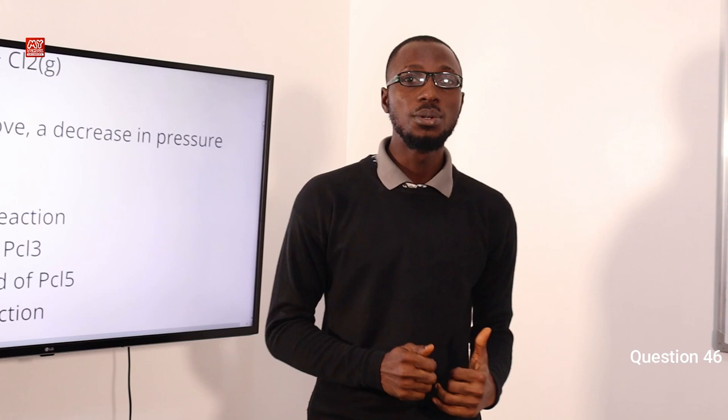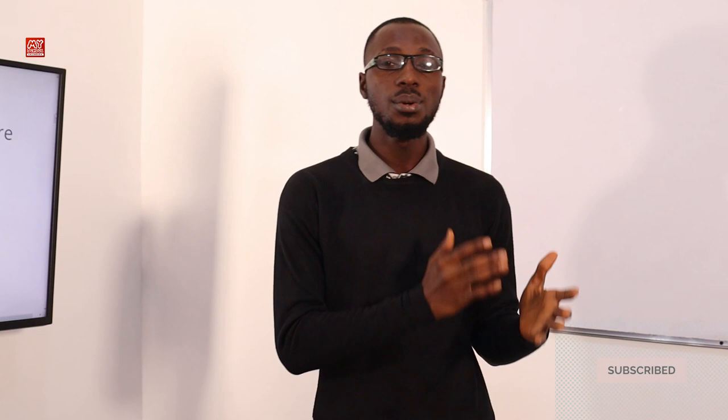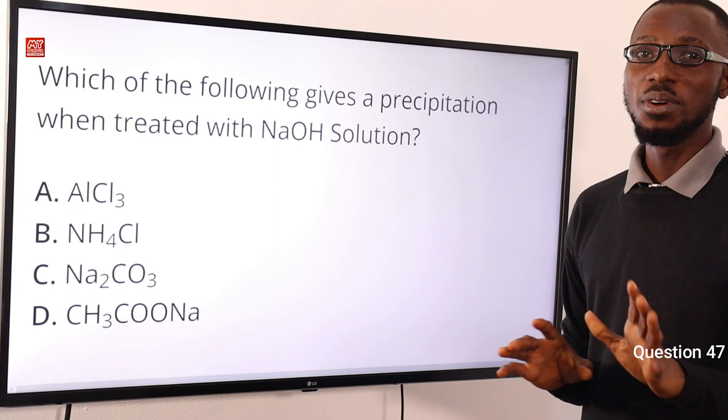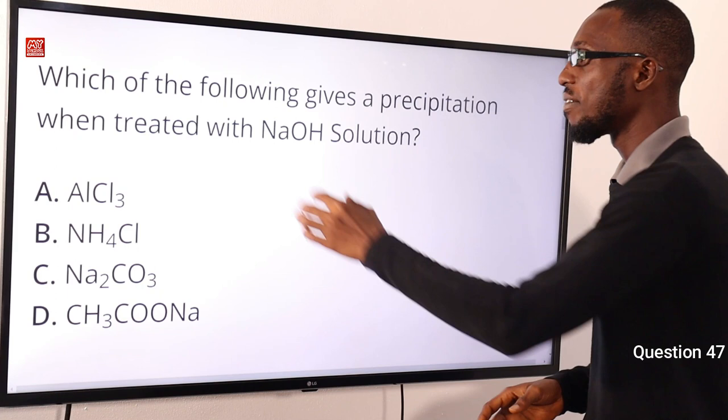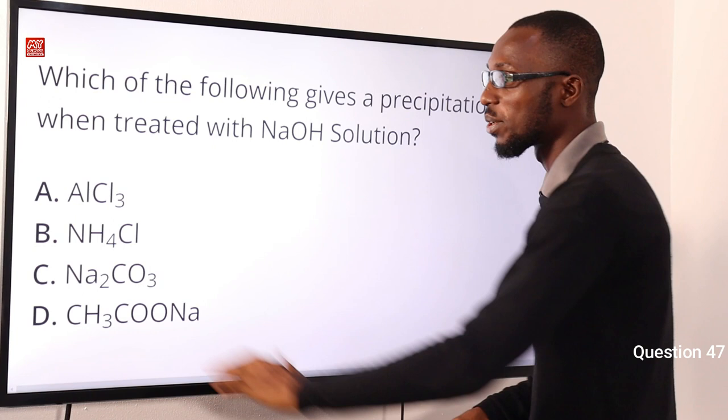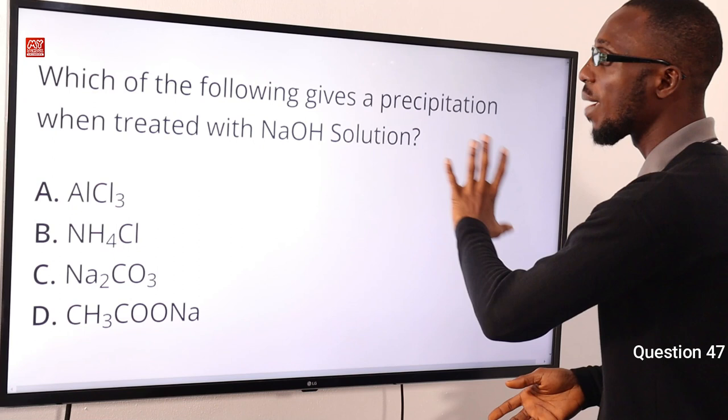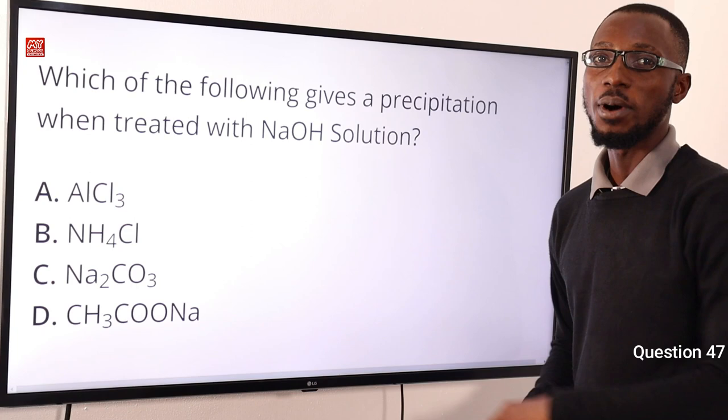Don't forget to hit the like button, click subscribe, and tap the notification bell. Question 47: Which of the following gives a precipitate when treated with sodium hydroxide solution? That is aluminum chloride. Treating it with NaOH gives aluminum hydroxide — a white precipitate. With excess NaOH, you get sodium meta-aluminate. The correct option is option A, aluminum chloride.